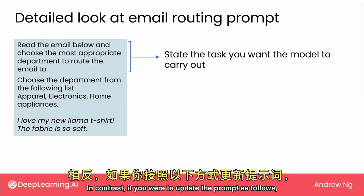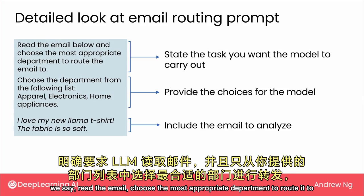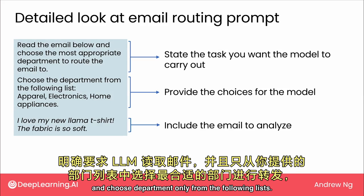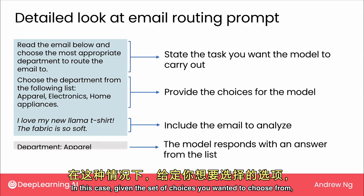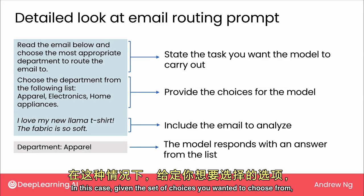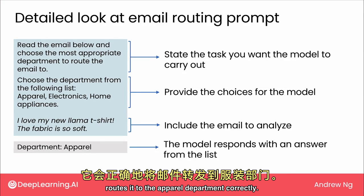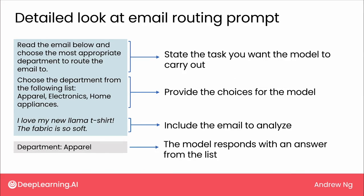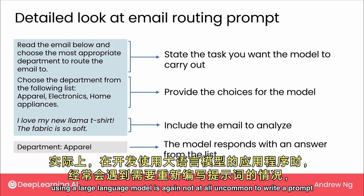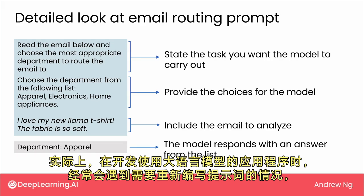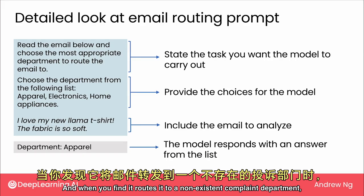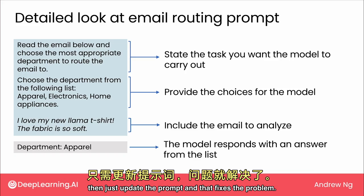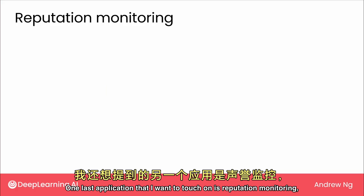In contrast, if you update the prompt to say: 'Read the email, choose the most appropriate department to route it to, and choose only from the following list' — then given the set of choices, it correctly routes it to the apparel department. In the process of building an application using large language models, it's not at all uncommon to write a prompt that doesn't quite work right the first time. When you find it routes to a non-existent complaints department, just update the prompt and that fixes the problem.